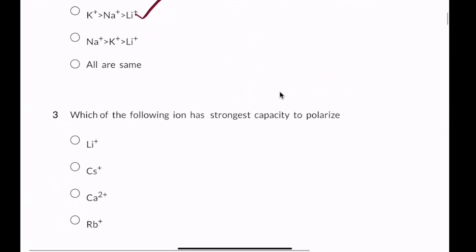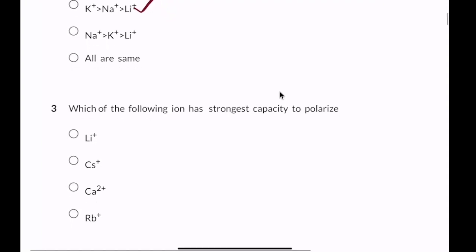Which of the following ions has the strongest capacity to polarize? Lithium plus. Because of the smaller size of the cation. Smaller size relates to greater polarization.